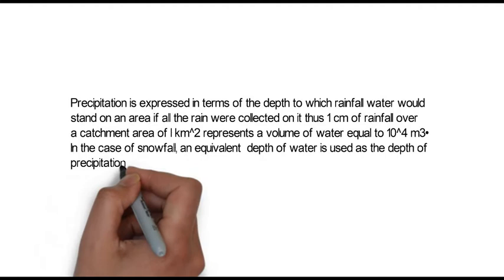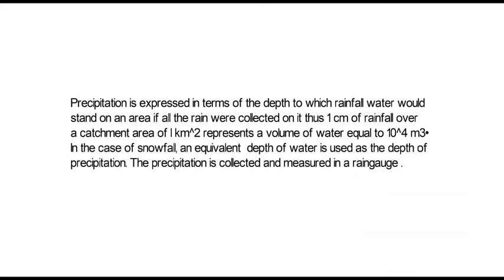In the case of snowfall, an equivalent depth of water is used as the depth of precipitation. The precipitation is collected and measured in a rain gauge.